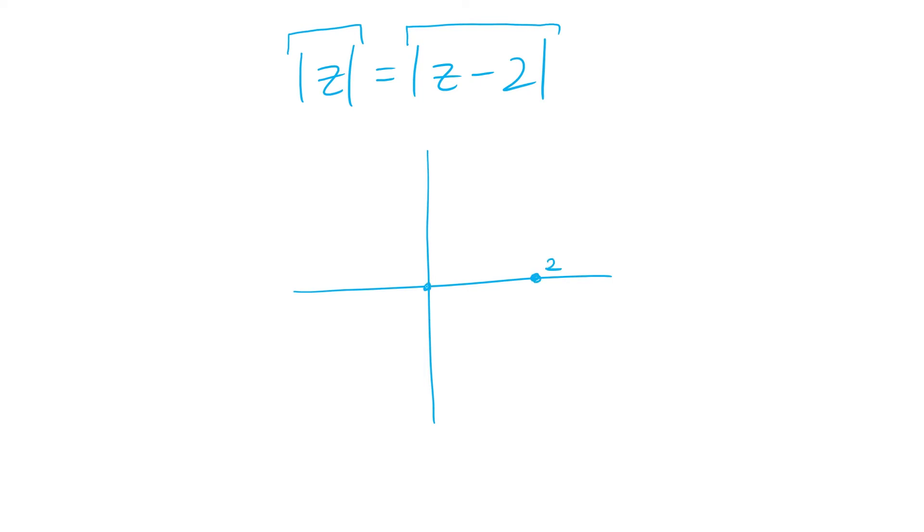So say we have the point 2 here and we have the origin here. Every point in the complex plane that has an equal distance between those two points is going to be on the line between them which is at real of z equals 1.